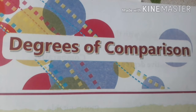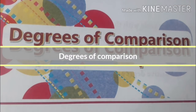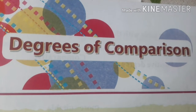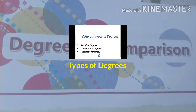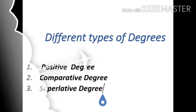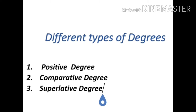Today we will discuss degrees of comparison. We use degrees of comparison to compare a person or thing with another. There are three types of degrees: one, positive degree; two, comparative degree; and three, superlative degree. Now we will discuss each one by one.